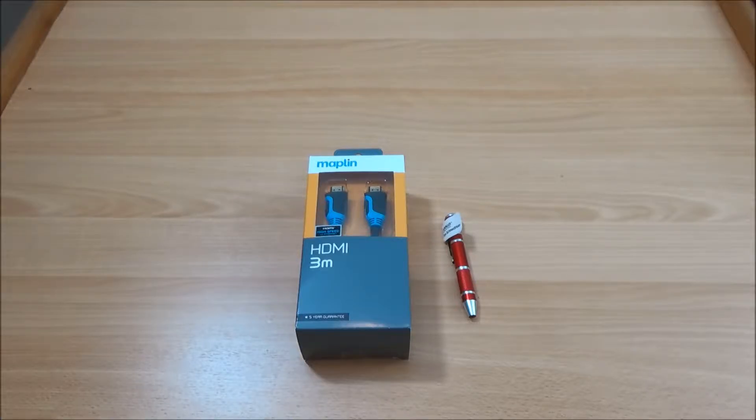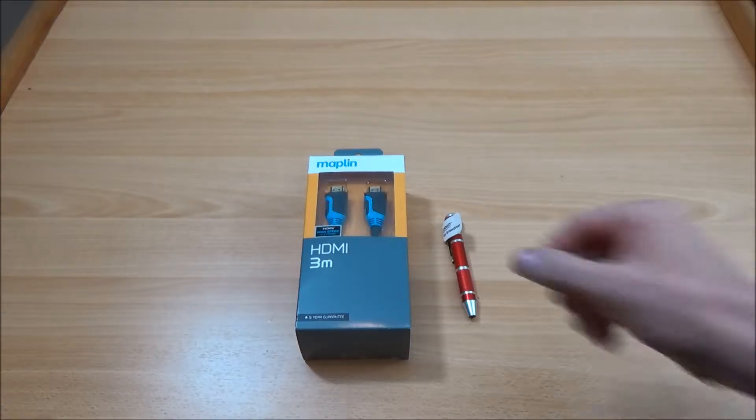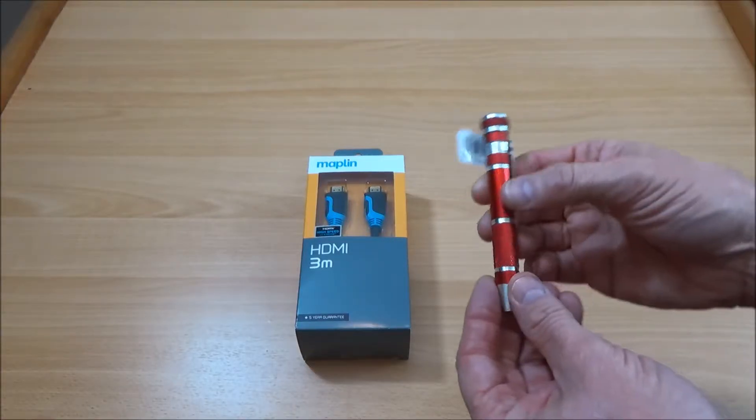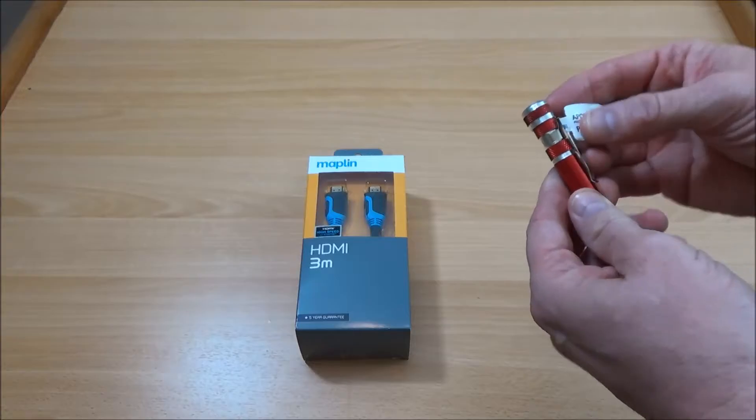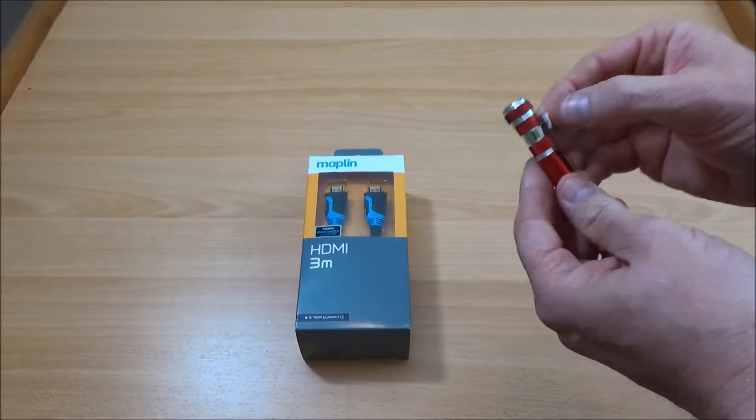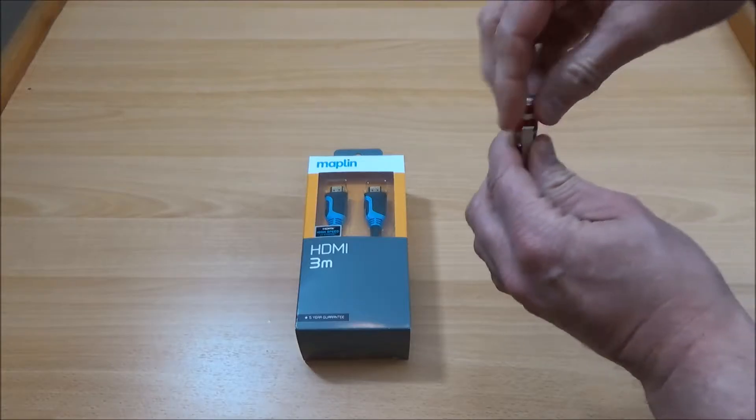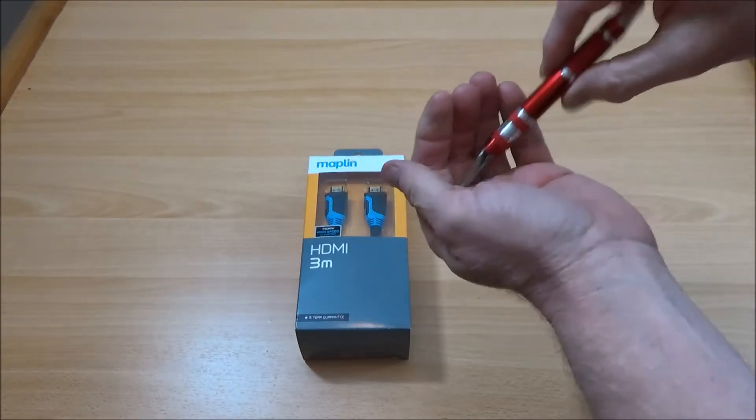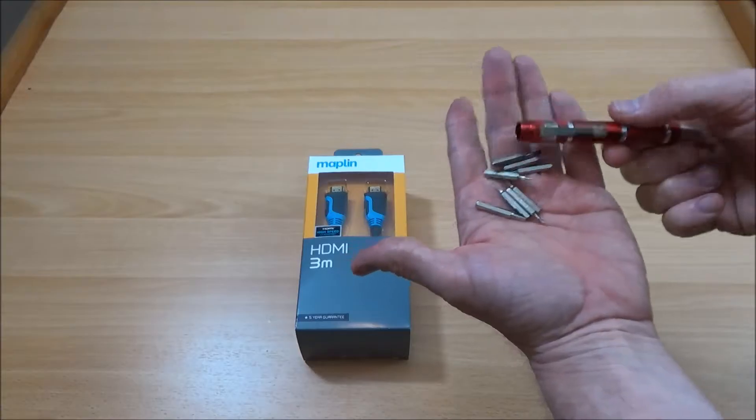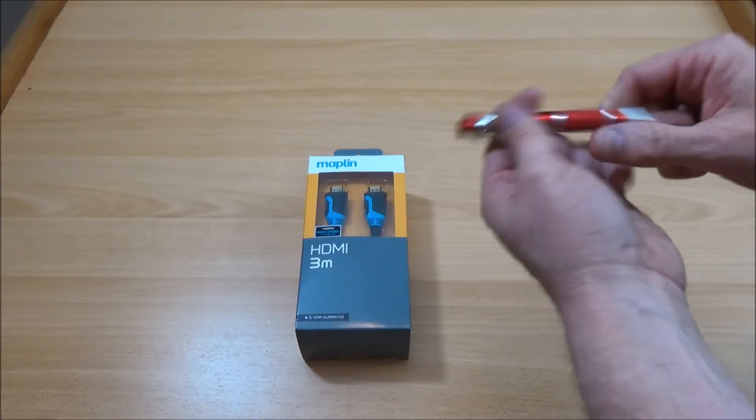This was meant to be an unboxing of an HDMI cable and a pen that I picked up at the same time, but it's not actually a pen - it's a screwdriver as you've probably guessed. It's got various bits inside. I just pull off the label there and screw the top. What's nice is that they're quite fine screwdriver bits and there's different types in there.